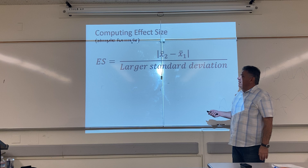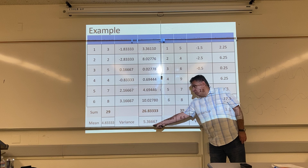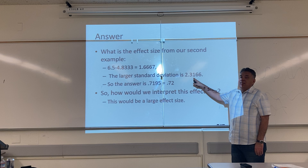Where did you get this number from, Jose? We had to take the standard deviation of the larger variance. Take your calculator, take the square root of 5.3667, and that's where we get this answer: 2.3166.